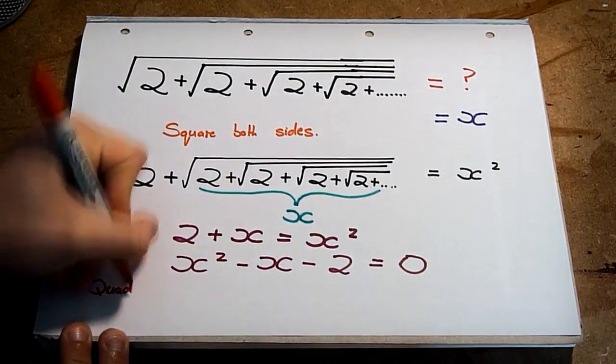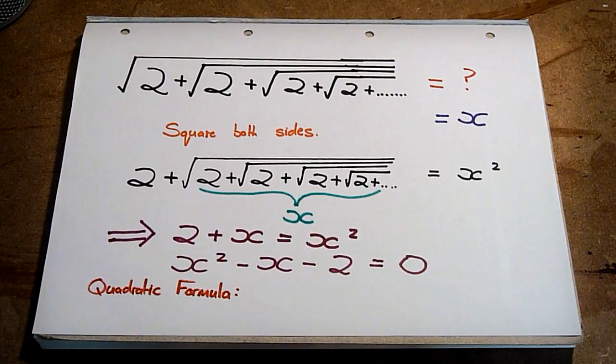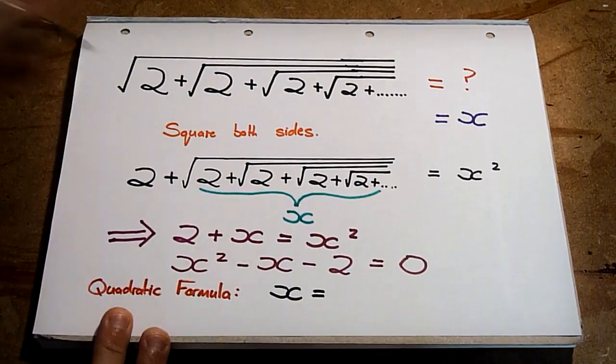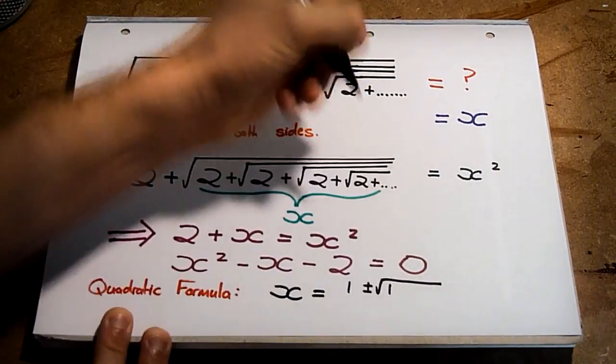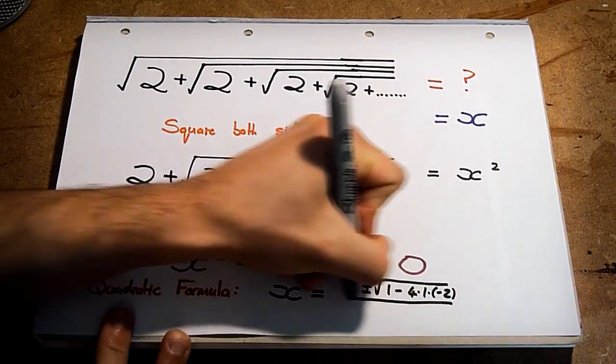And now we can solve by using the quadratic formula. In this case, a equals 1, b equals minus 1, and c is minus 2. And so x equals 1 plus or minus the square root of 1 squared minus 4 times 1 times minus 2 all over 2.